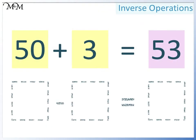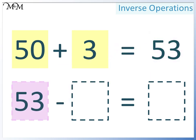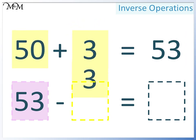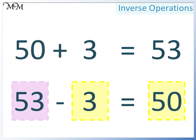Now, for the second subtraction. Again, 53 is the largest number, so it must go at the start. This time, we'll subtract 3. And so, the final number must be 50. 53 take away 3 equals 50.